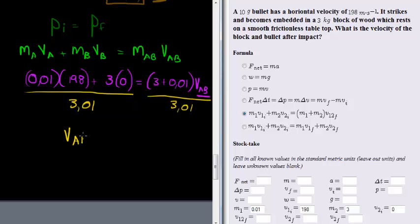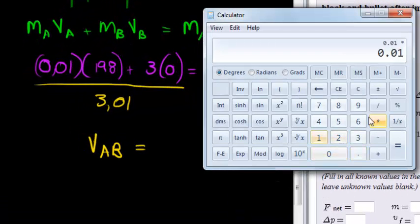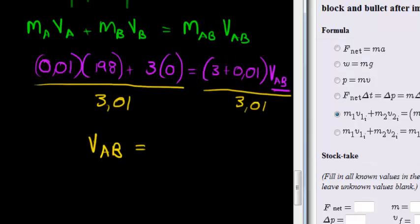Well, we get that the velocity of AB is therefore equal to 0.01 times 198, plus 3 times 0, you can obviously leave that out. So in total in the numerator we get 1.98 divided by 3.01, and what do we get? 0.657, two decimal places, 0.66 meters per second. So we get 0.66 meters per second. Let's go fill that out.